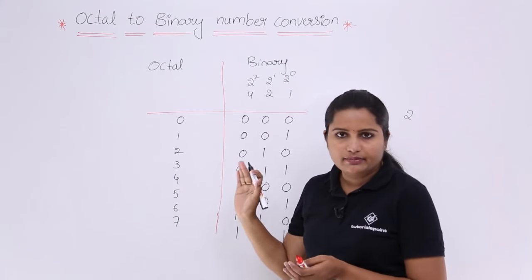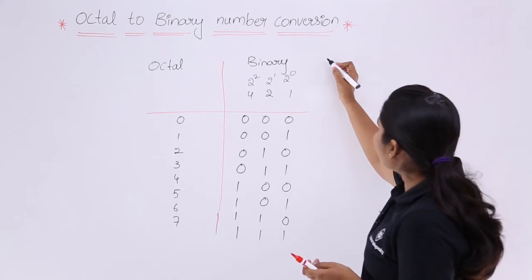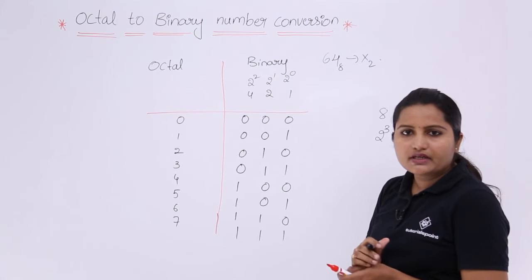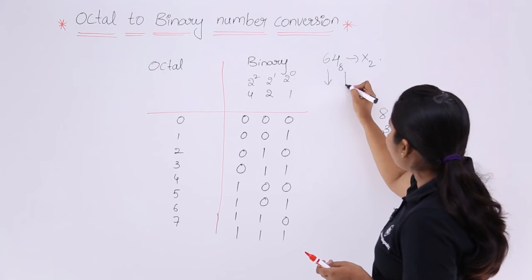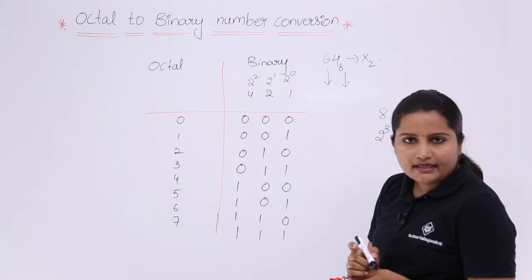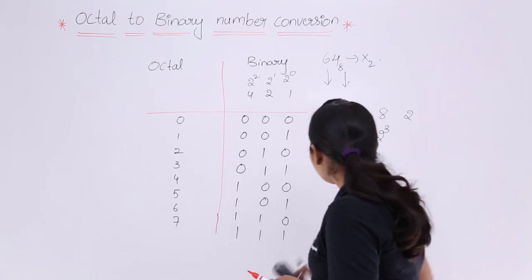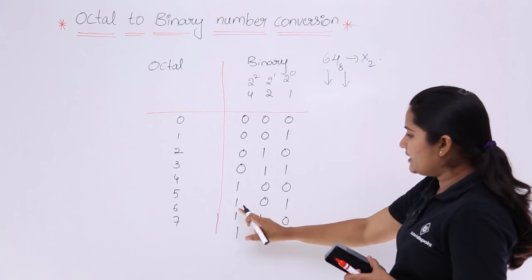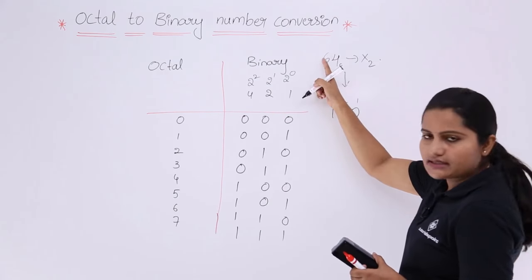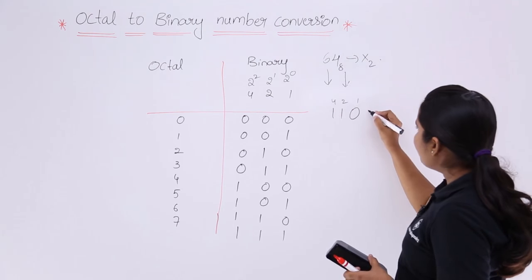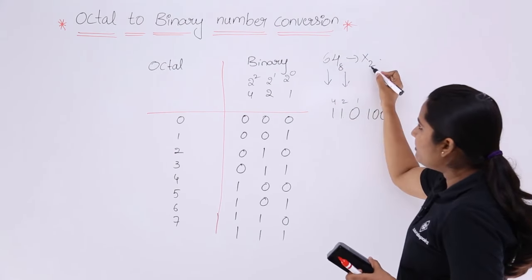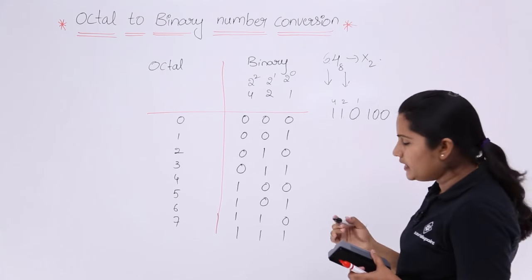Like this you can convert octal to binary directly using this table. For example, to convert 64 octal to binary, take each digit separately — write binary for 6 and binary for 4. Binary for 6 is 1 1 0 (since 4 plus 2 equals 6), and binary for 4 is 1 0 0, so the binary equivalent of octal 64 is 110 100.